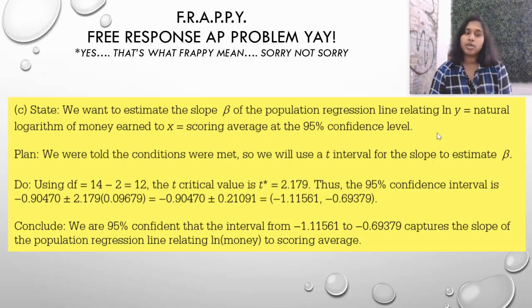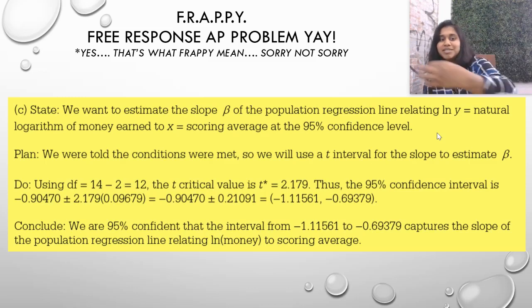For our do statement, our degrees of freedom changes just a little bit. It's N minus 2 for these types of questions. And then we found a T critical value using either the textbook tables, given information in the formula charts, or using an online program. We plug that in to our plus or minus, right? We take our statistic, negative 0.90470 plus or minus the critical value times the error.